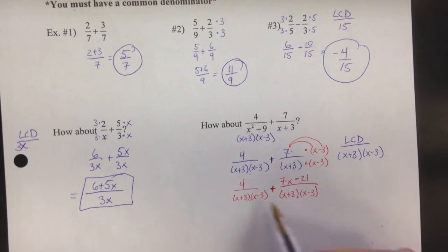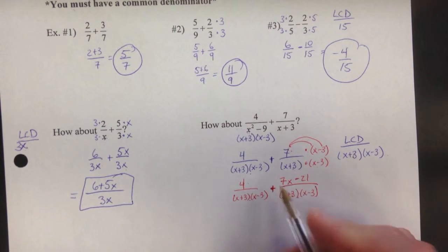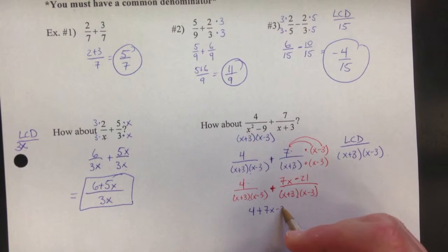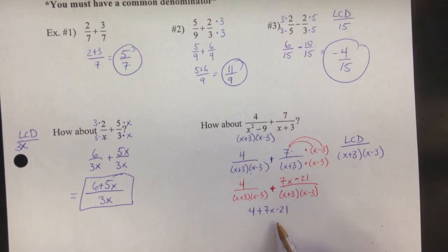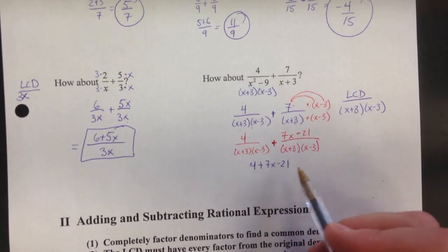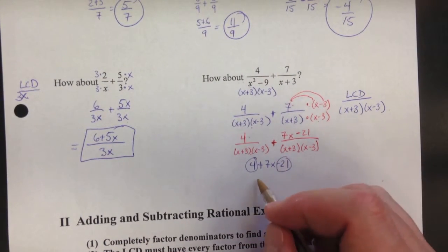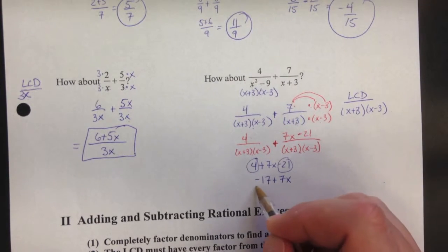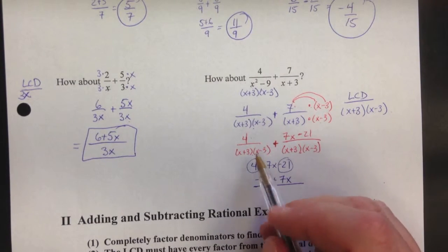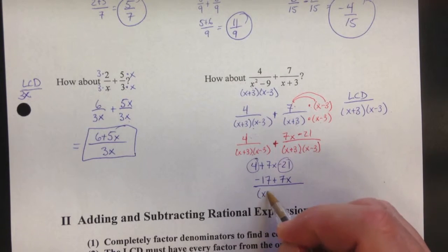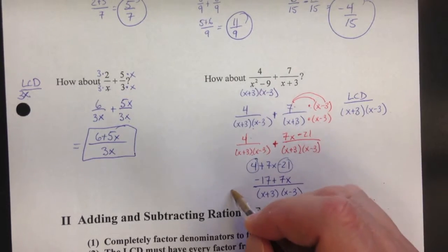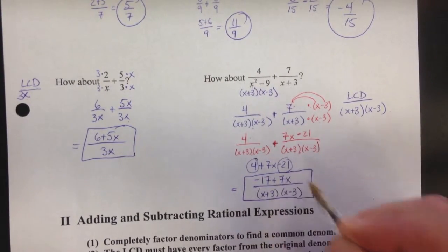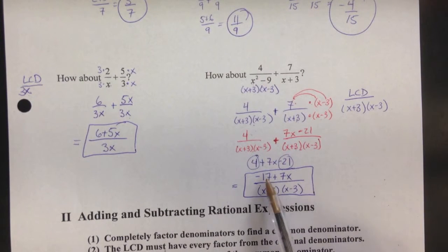Adding the numerators: 4 plus 7x minus 21. Combining like terms, 4 minus 21 is negative 17, giving us negative 17 plus 7x. So the final answer is (7x − 17) over (x + 3)(x − 3). This is as far as you can go — it's fully simplified.